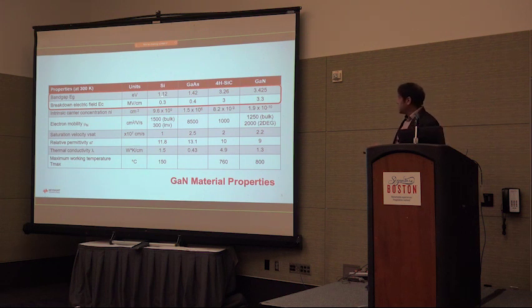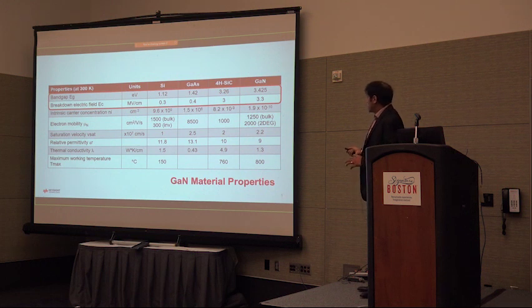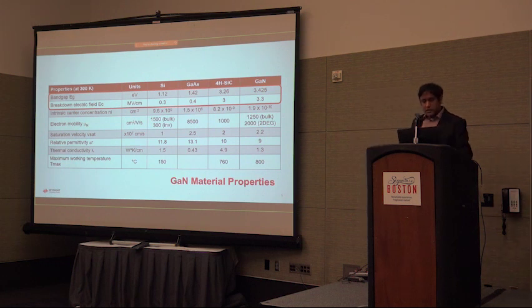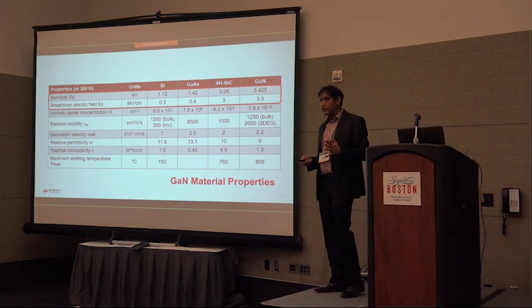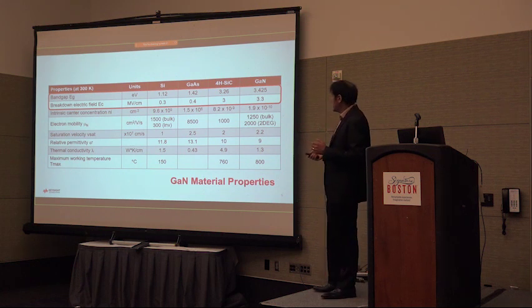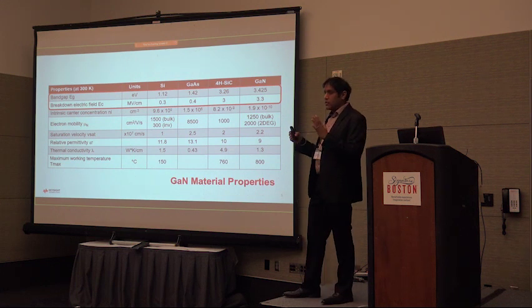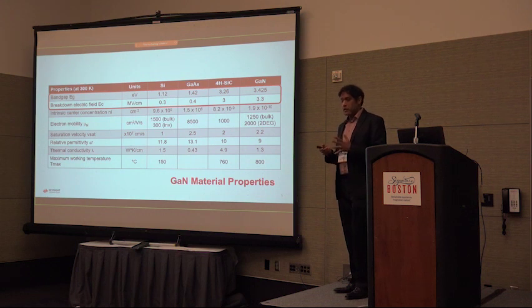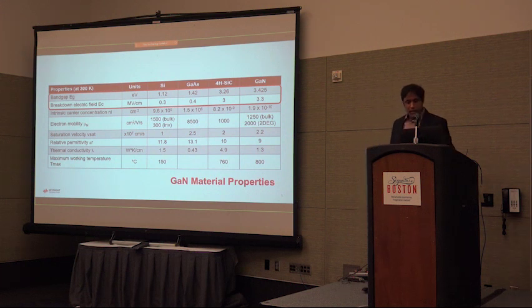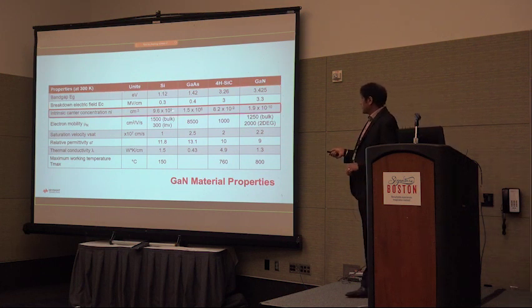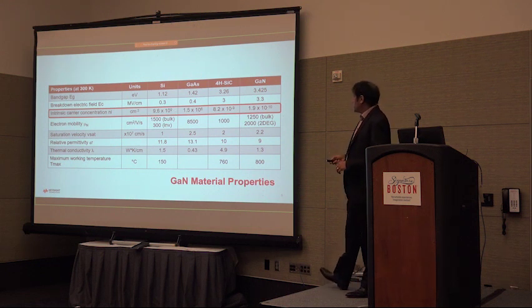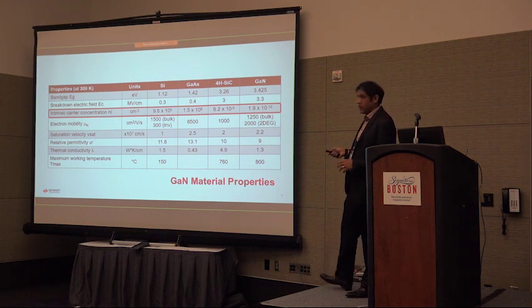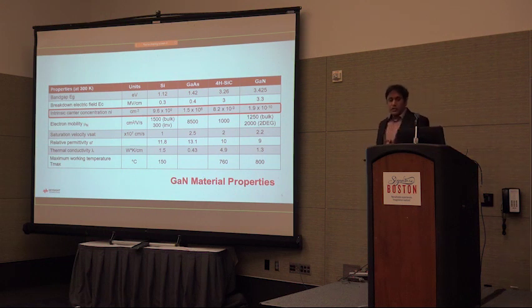Silicon and gallium arsenide have relatively low bandgap values of 1.12 and 1.42 eV, while silicon carbide is much higher at 3.26 and GaN at 3.425 eV. The larger the bandgap, the more energy it takes to excite an electron from the valence band to the conduction band. The bandgap value is correlated to the critical electric field for breakdown — the field required to pull a valence electron away from its lattice and cause device breakdown, which we want to avoid.